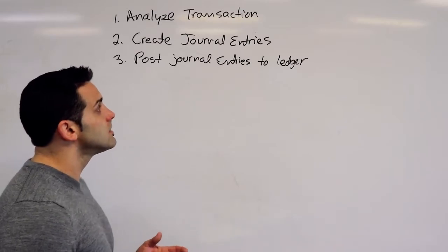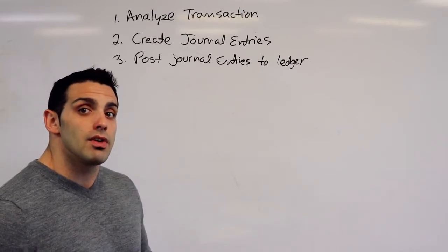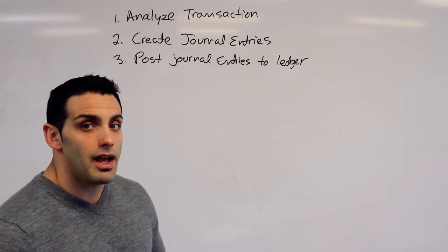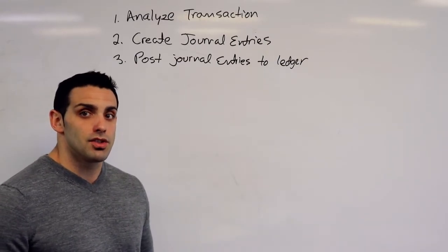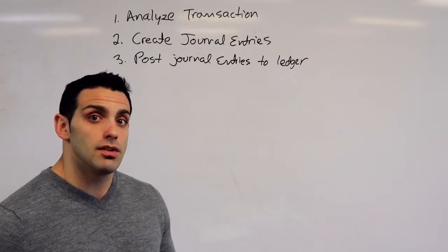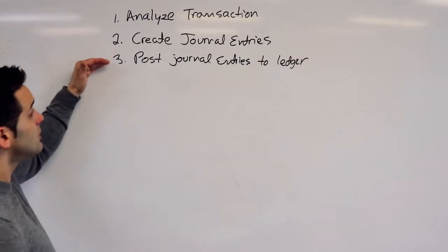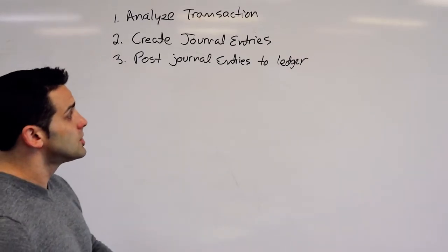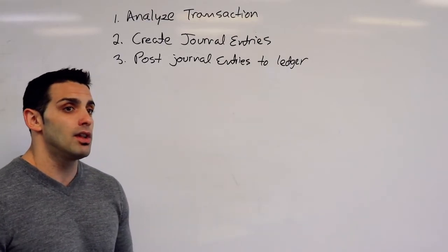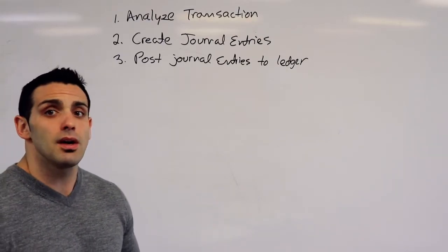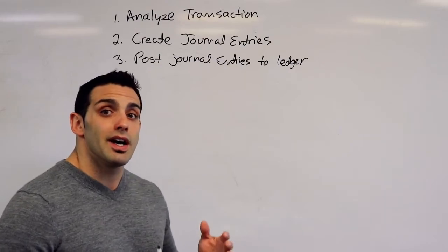And from those classifications we should be able to create journal entries. And now we're adding those transactions to a journal. So after we have those journal entries created, now we're moving on to posting those journal entries to a ledger. And now a ledger is really just a summary of all those accounts.